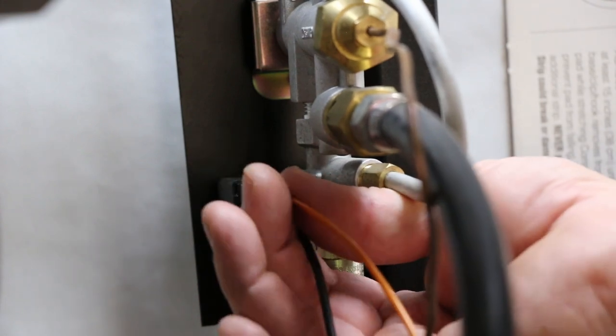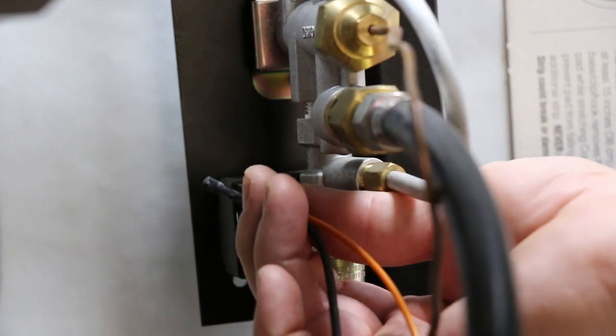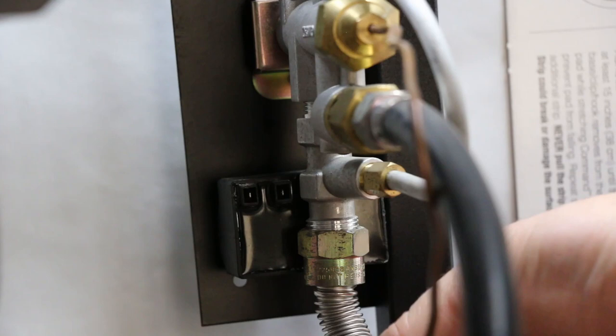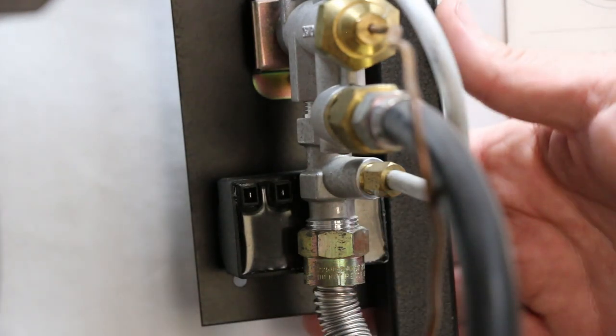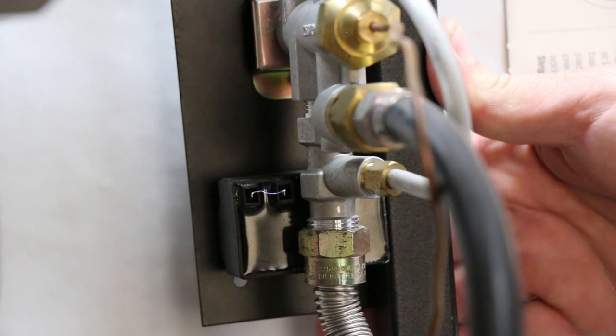If you still hear the spark but do not see the spark, disconnect the wires from the sparker again. Depress the sparker and inspect the back side of the sparker box. You should be able to see the spark arcing between terminals on the back side of the sparker. If not, replace the sparker.